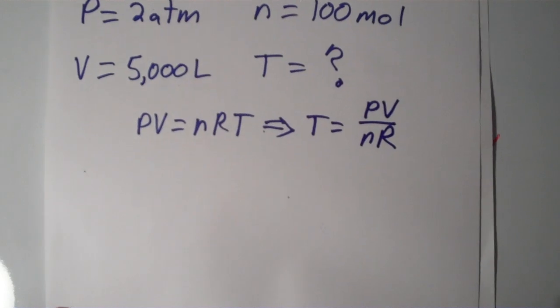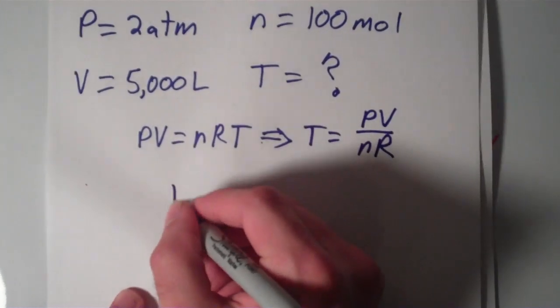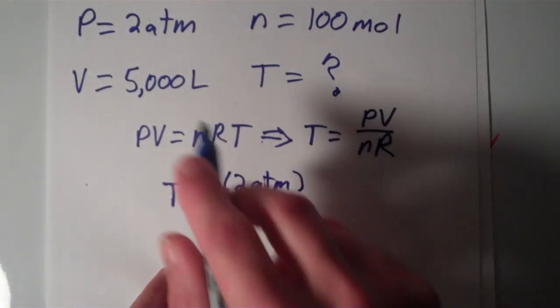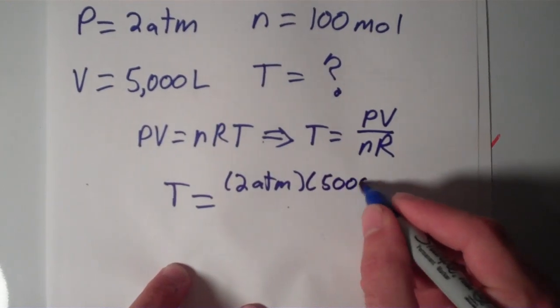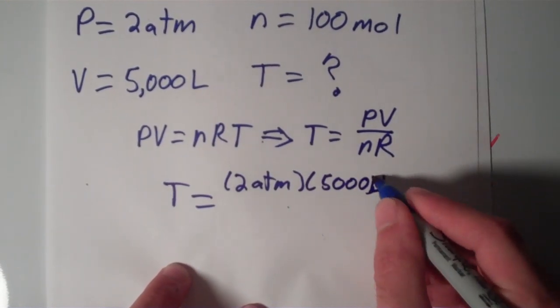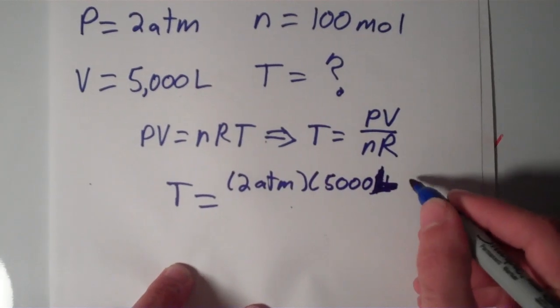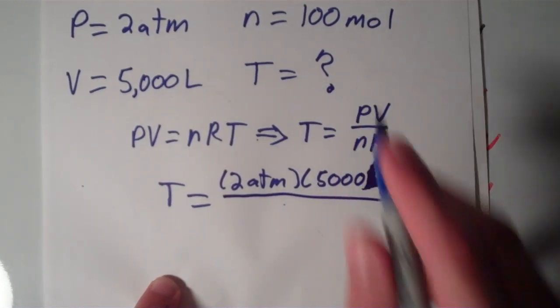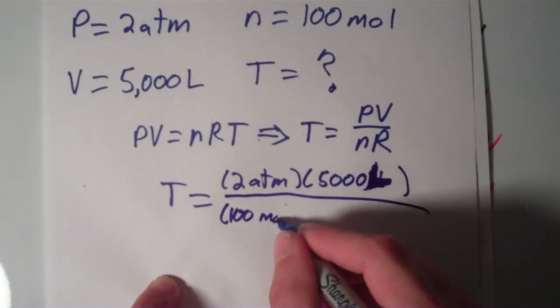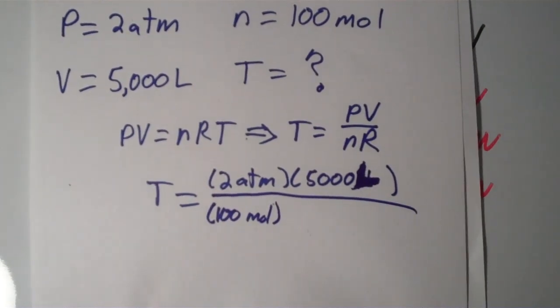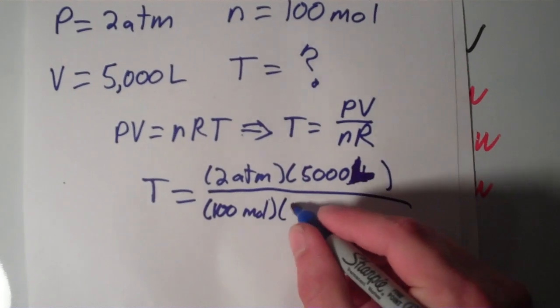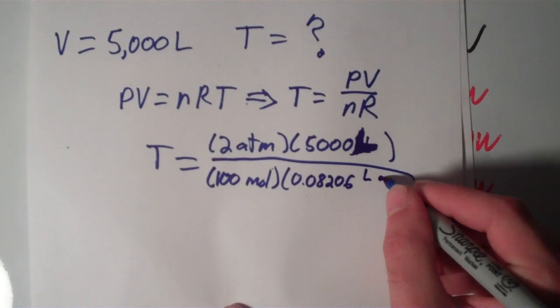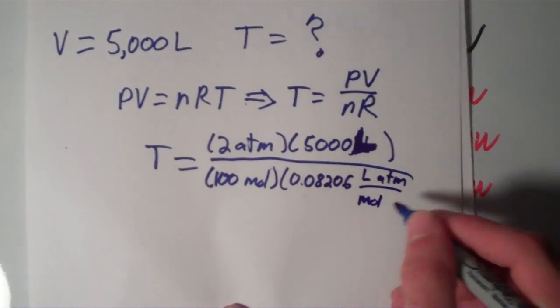And now all we have to do is just plug in the values. So, we'll get that T is equal to the pressure, that's 2 atmospheres, times the volume, that is 5000 liters. The amount, 100 moles, and the value of the gas constant R, that is 0.08206 liters times atmospheres over moles times kelvins.